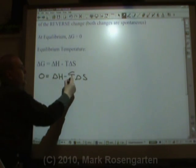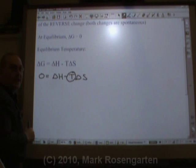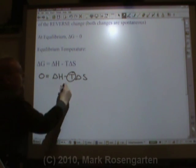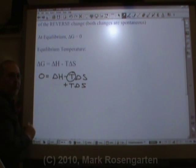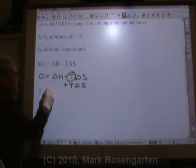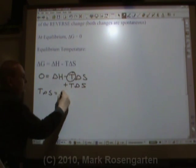If we want to find the equilibrium temperature, delta G is going to have to be an equilibrium delta G. So let's rearrange this. First, let's add T delta S to both sides to get rid of that minus sign. So T delta S equals delta H. Now, to find the temperature, divide both sides by delta S.